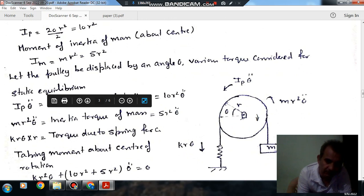Then the displacement of spring is R theta, because this angle theta, this is radius. So the displacement of spring is R theta and spring force is KR theta.